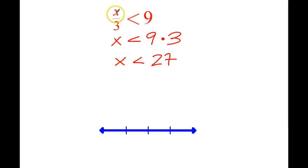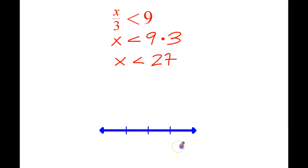Because if I plug in 27 here, 27 divided by 3 is 9, and is 9 less than 9? No, it's equal to, not quite less than. So let's plug in our numbers here. We have 26, 27, 28, and I'm saying anything less than that — here and lower.